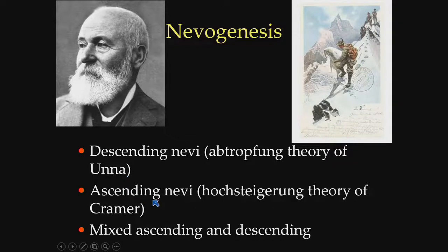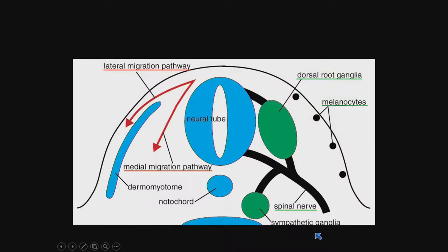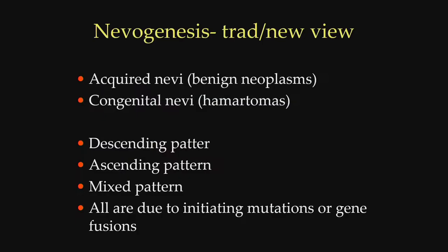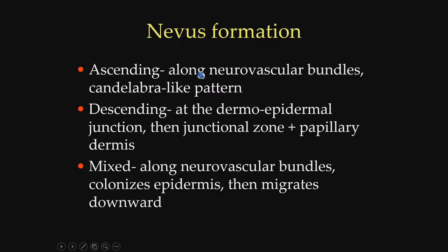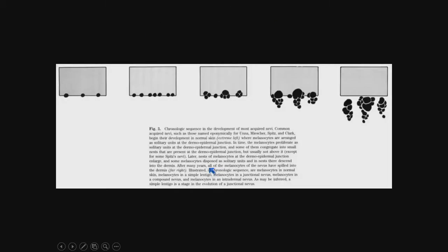There's another competing theory: some nevi are ascending nevi, where the melanocytes climb up and sometimes reach the epidermis and sometimes don't. I'll propose a third possibility — that some nevi have a mixture. How do nevi form? Melanocytes migrate from the neural tube into the epidermis and sometimes into other organs. In nevus formation they move along neurovascular bundles, which is why we sometimes see a candelabra-like pattern in the ascending form. In the descending form, they proliferate at the junction and then drop down into the dermis — both types of growth are probably possible, and sometimes you can see a mixture.